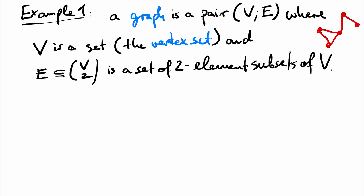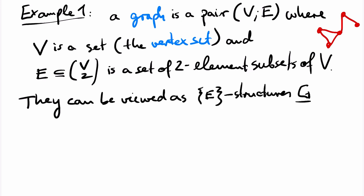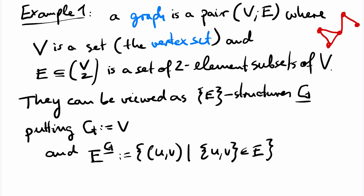A graph can be viewed as a structure with a signature that contains just a single binary relation symbol. Typically we use a capital E. The relation for E in the structure contains all ordered pairs uv such that the set uv is an edge in the graph.